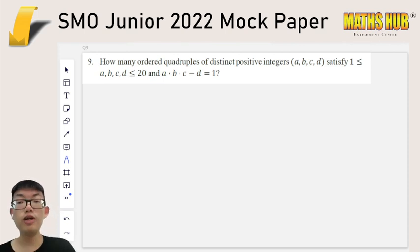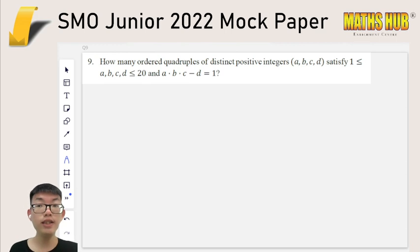Question 9. How many ordered quadruples of distinct positive integers A, B, C, D satisfy A, B, C, D are all between 1 and 20, and A times B times C minus D is equal to 1? Take note that it says distinct positive integers. And ordered quadruples doesn't mean they are ascending or descending order. It just means that order matters. So something like if you did 1, 2, 3, 5, and you did 3, 2, 1, 5, that would be considered as a different quadruple. A different ordered quadruple, I should say. So that's what this is trying to specify.